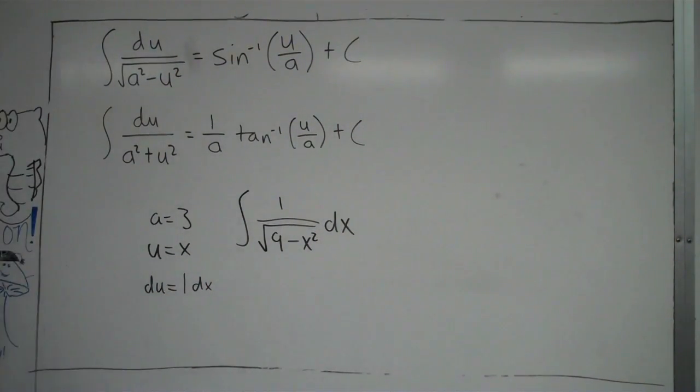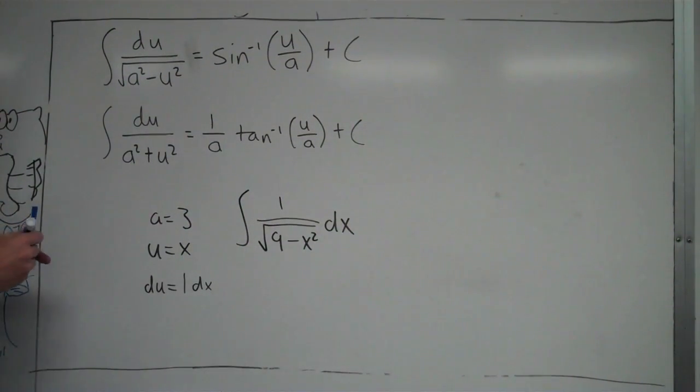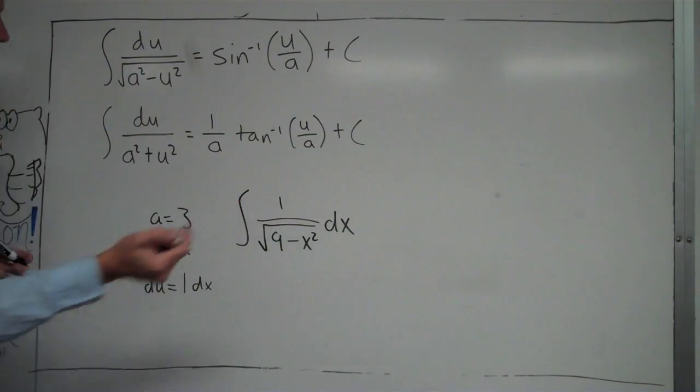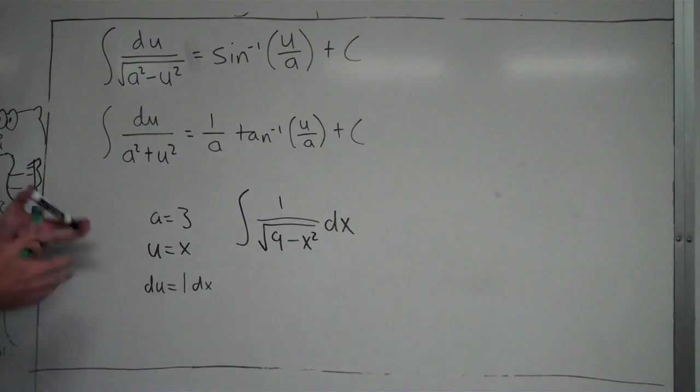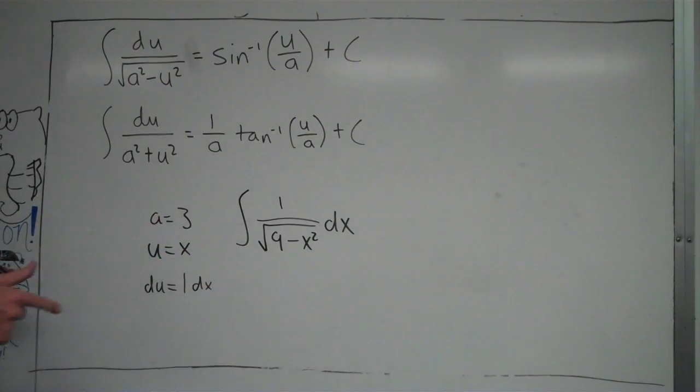What you're checking is that du is on top. In this case, it's perfectly set up for us. The 1 is on top, so it works out as is. There are no adjustments that need to be made. This is set up perfectly.